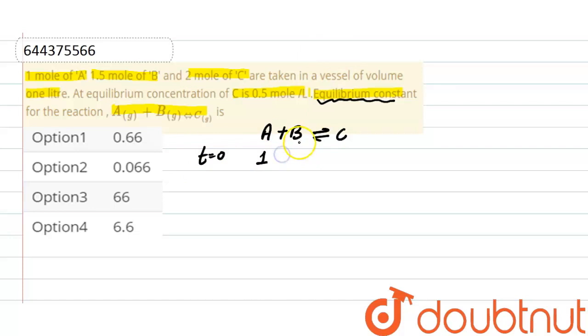Initially, at t equals 0, moles of A are 1, moles of B are 1.5, and moles of C are 2.